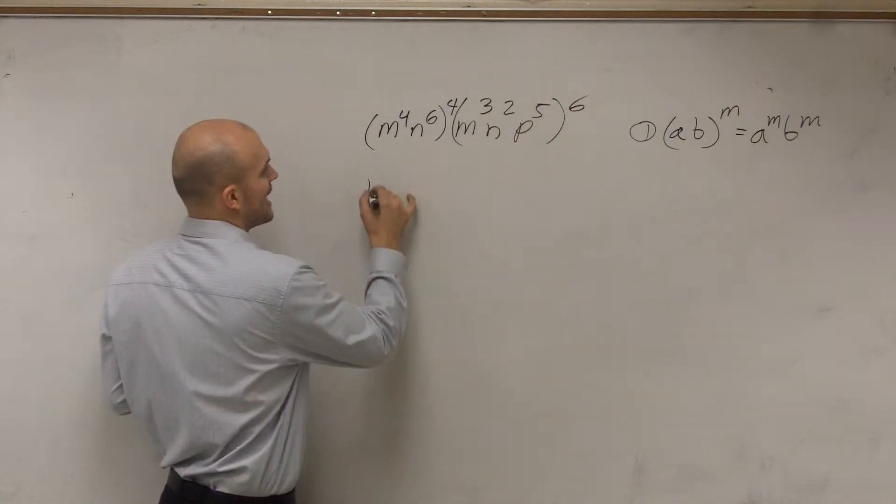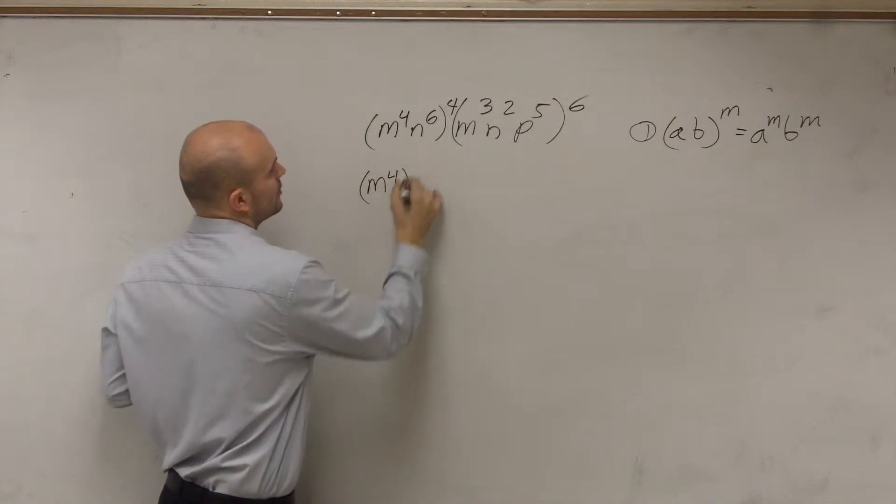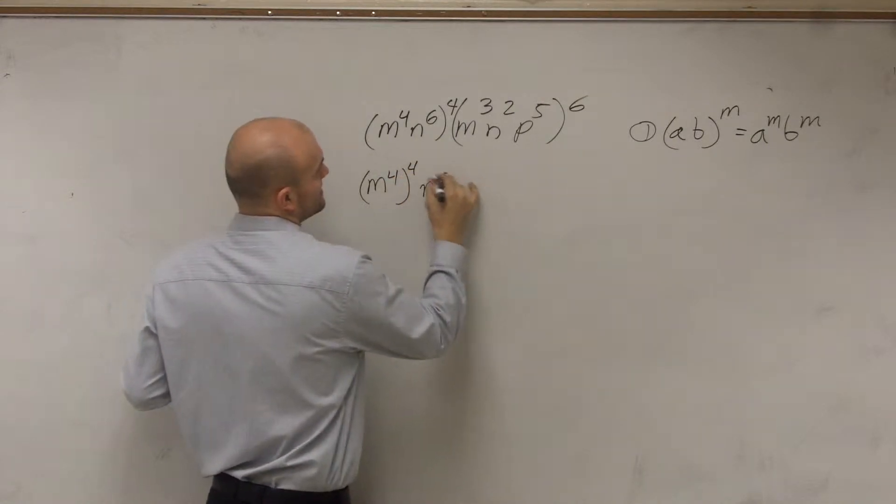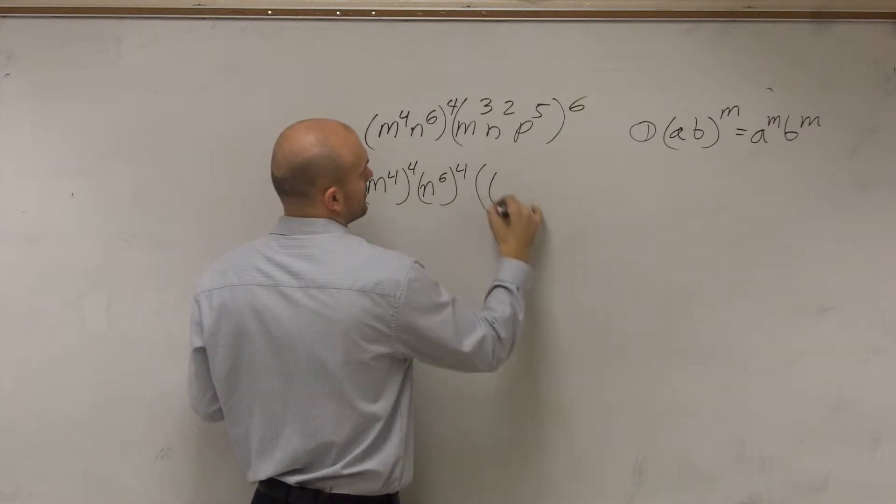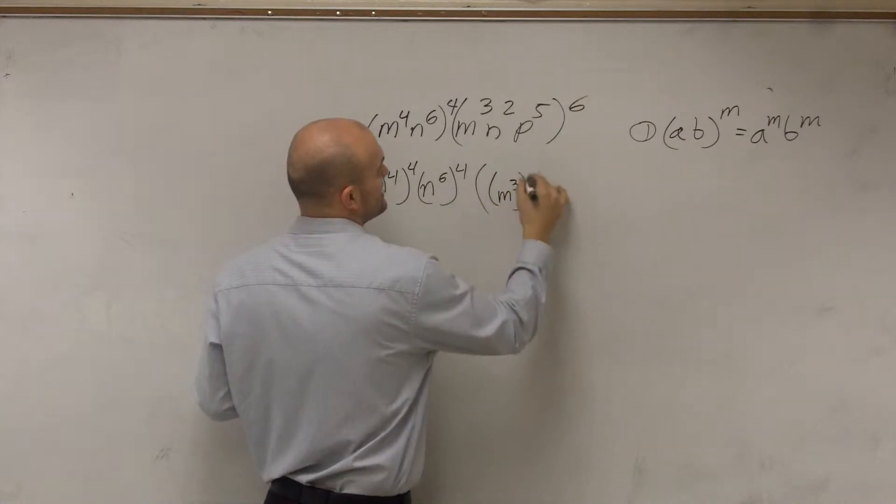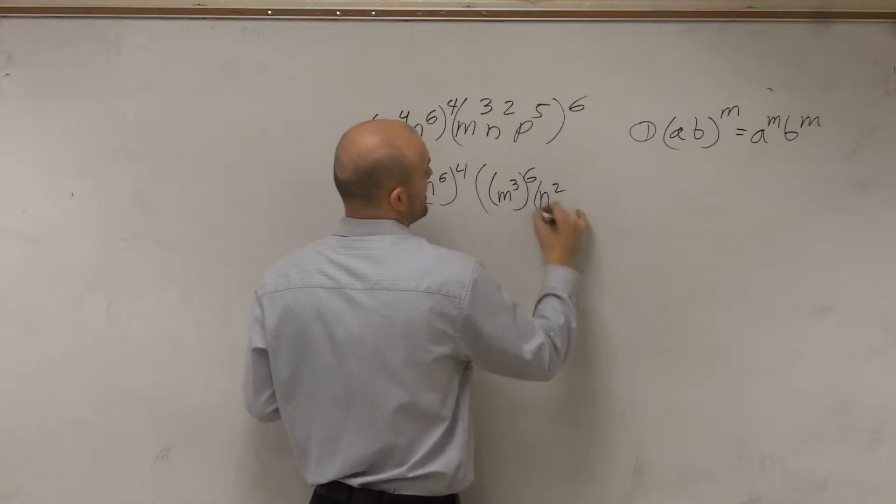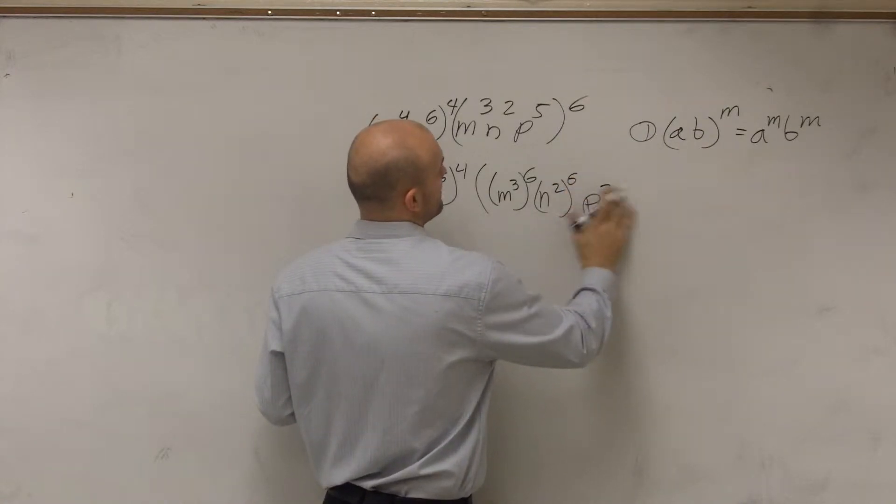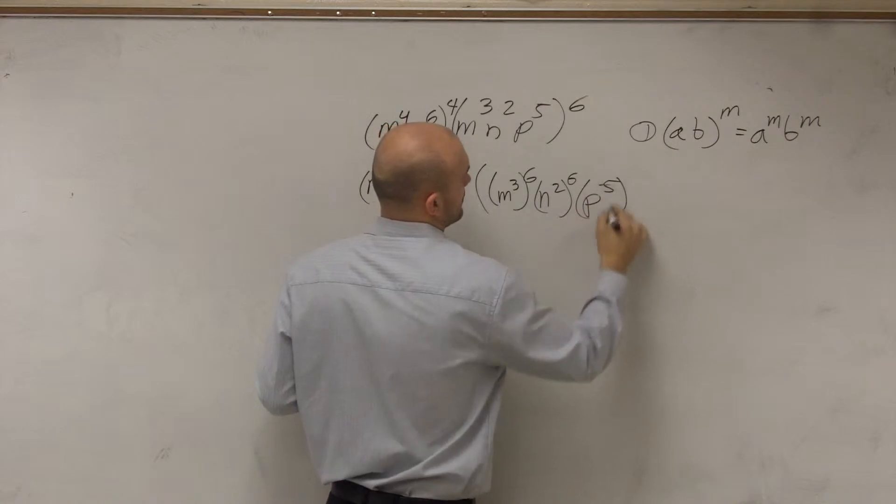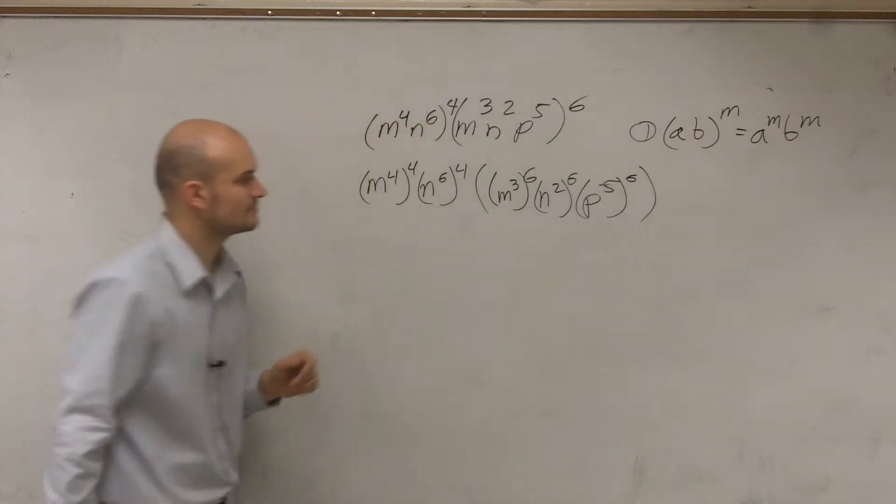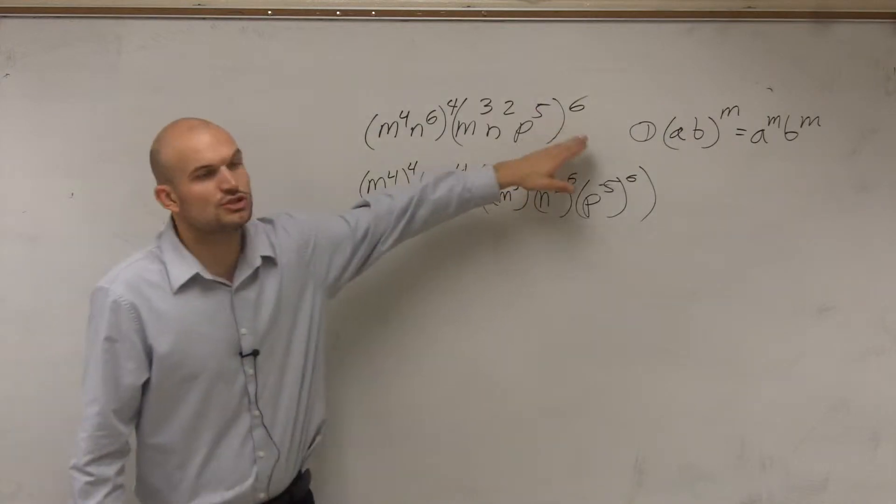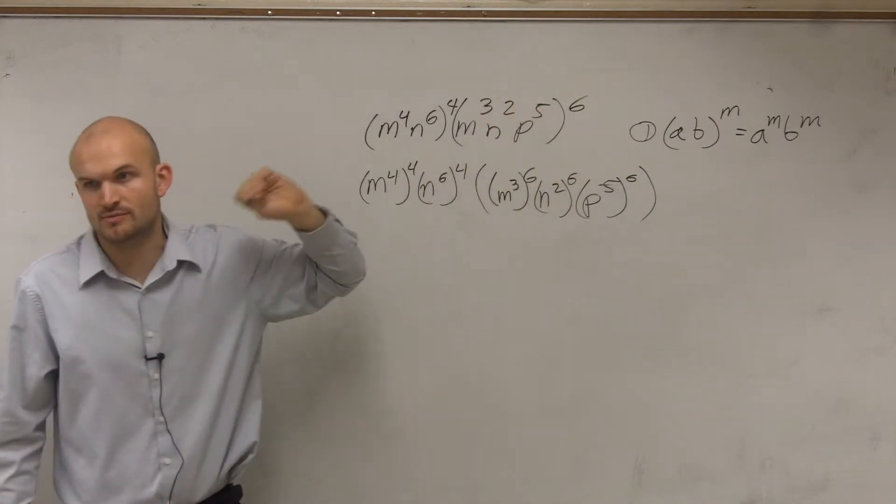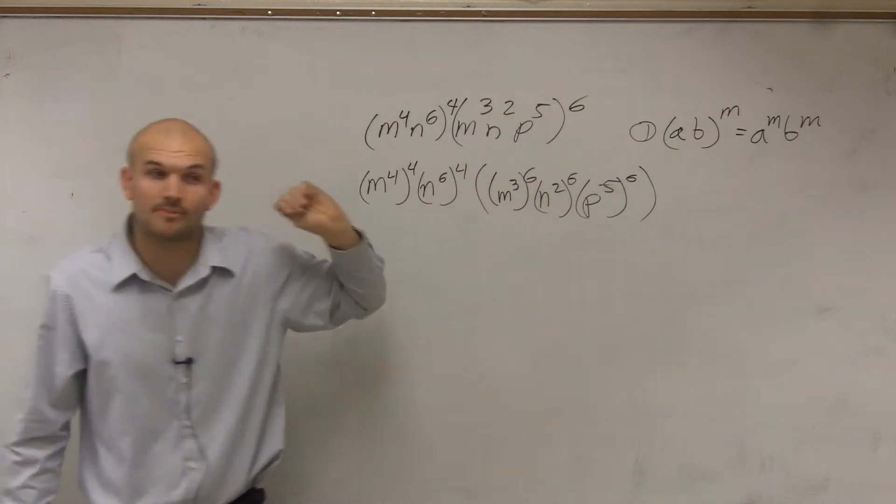I'm going to have m to the fourth raised to the fourth n to the sixth raised to the fourth times m to the third raised to the sixth, n squared raised to the sixth, p to the fifth raised to the sixth. Did everybody see that? What I did? I just pretty much distributed the exponent to all the terms. It's the power of product property.